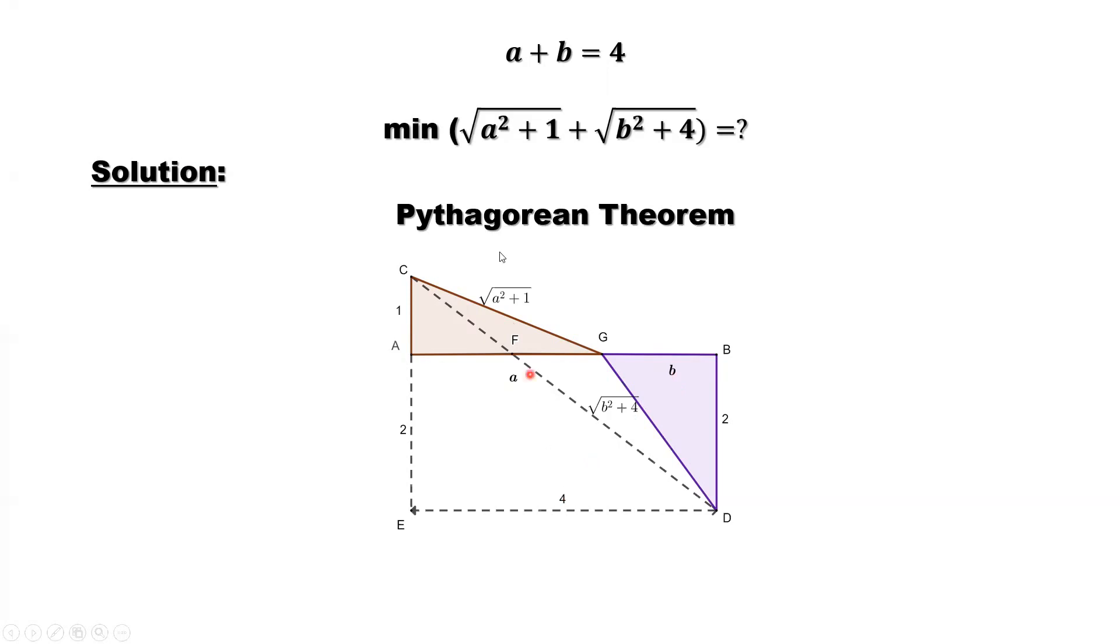Now look at the first part, square root of a squared plus 1. So here we have this top right triangle. Here's a, one side, adjacent to the right angle. And here's 1.